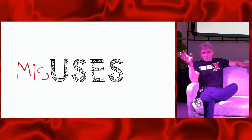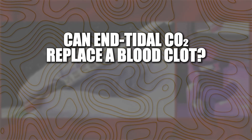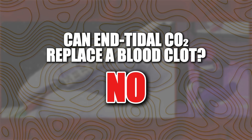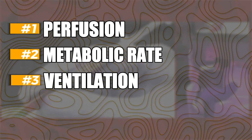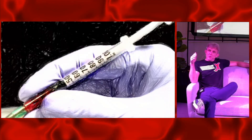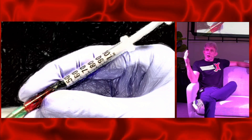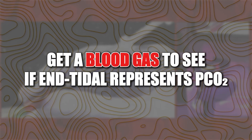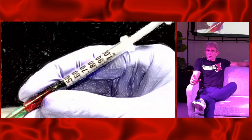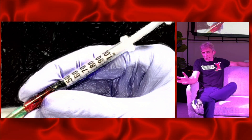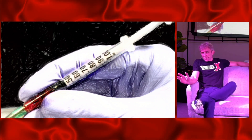Can you use end-tidal as a surrogate for a blood gas? Unfortunately, no. End-tidal represents perfusion, metabolic rate, and ventilation, so it doesn't always match PaCO2. It will never be higher than your PaCO2, but PaCO2 can be much higher than your end-tidal. You need a blood gas to confirm they correlate. Once you have a blood gas showing PaCO2 and end-tidal are similar, you can use it as a surrogate, and at that point you rarely need more blood gases anyway.